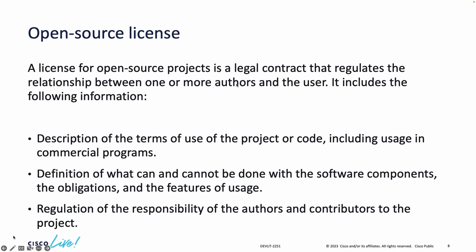A license for an open source project is a legal contract that regulates the relationship between contributors and authors. It includes: a description of the terms of use of the project including usage in commercial projects, and a definition of what can and cannot be done with the software components. This is important for those of you working in commercial companies who take code from GitHub and want to use it in proprietary software or software as a service.